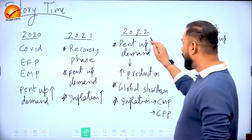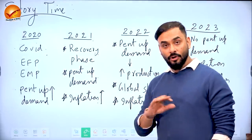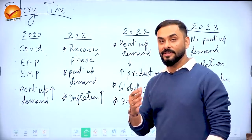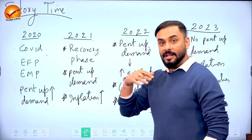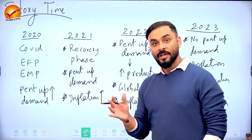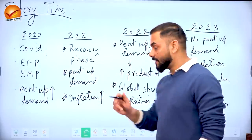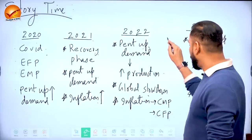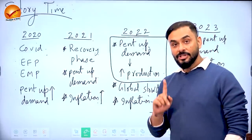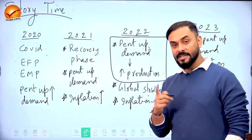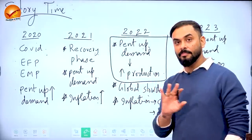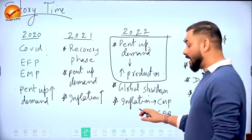In 2022, when COVID lockdowns ended, pent-up demand converted to real demand — people started buying laptops, phones, vehicles, and houses. Production increased and jobs were created. But negative developments also occurred: global slowdown, Chinese lockdown causing raw material shortages like semiconductors, and the Russia-Ukraine conflict making oil, natural gas, metals, and food prices costly. Inflation strengthened further.